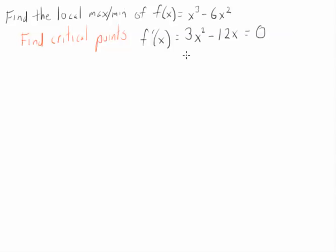Now, if I'm going to solve this, probably what I'm going to do is factor. And I can see that I can take a 3x out of both terms, and that's going to leave you with an x minus a 4. So these are my critical points, 0 and 4.